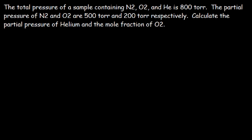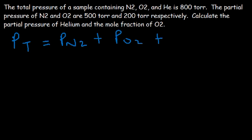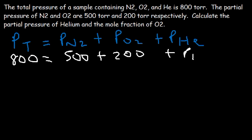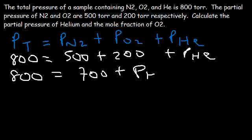Here's another problem. The total pressure is 800 torr, with the partial pressure of N2 at 500 torr and O2 at 200 torr. Our goal is to calculate the partial pressure of helium. According to Dalton's law, the total pressure equals the sum of the partial pressures of N2, O2, and helium. So 800 equals 500 plus 200 plus the helium pressure. Since 500 plus 200 is 700, subtracting gives 800 minus 700 equals 100 torr for helium.